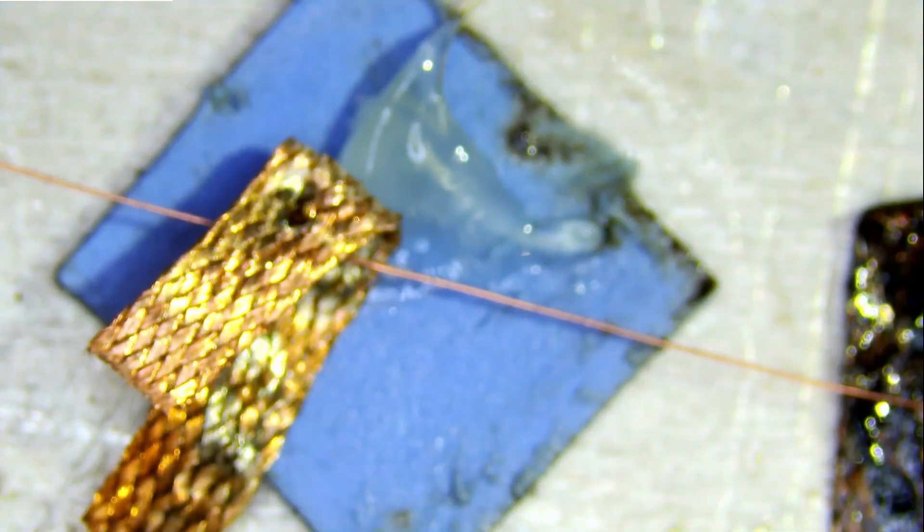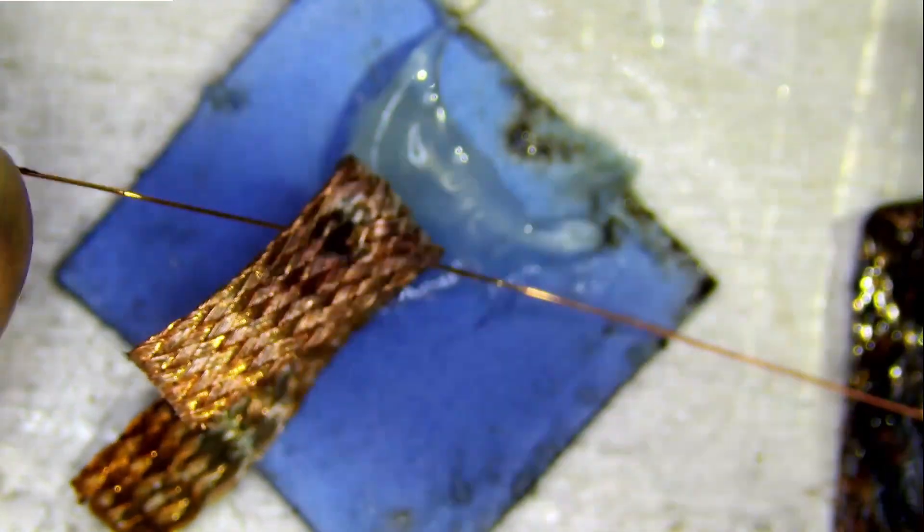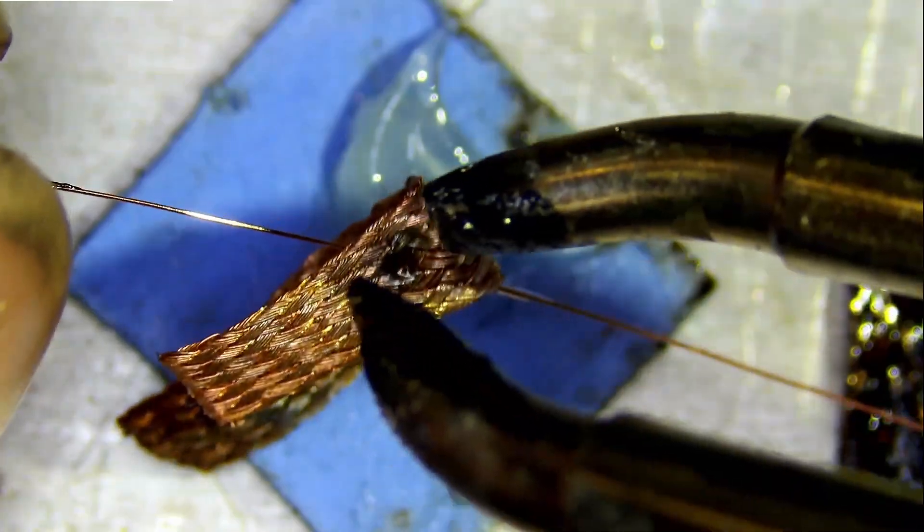Take your all-use solder wick. It's already got solder in it. We're going to put it around the enameled wire and we can grab it with our tweezers.